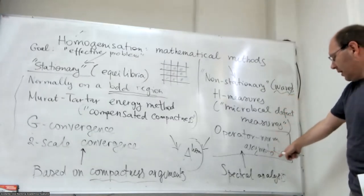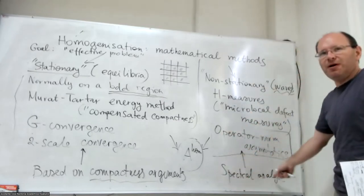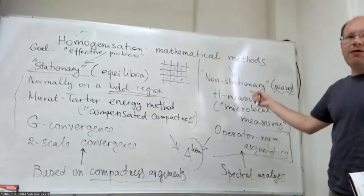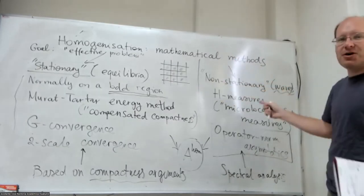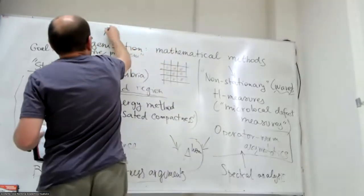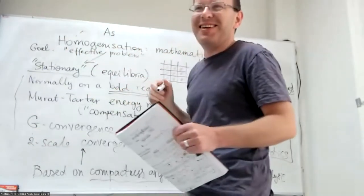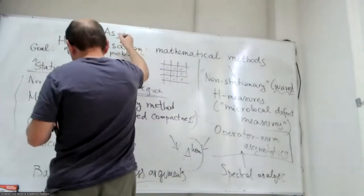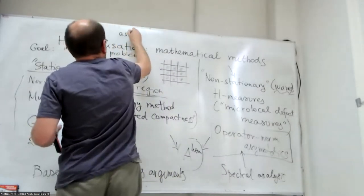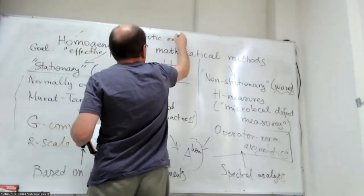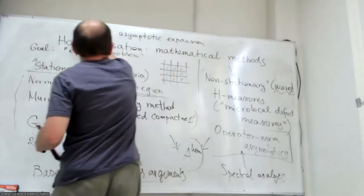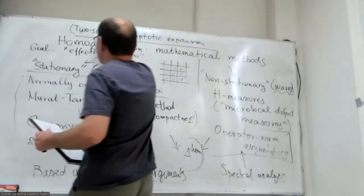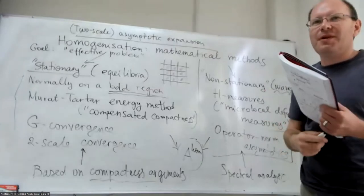There are two different groups of approaches. One is what they refer to as stationary techniques, typically applied on a bounded region, dealing with equilibria rather than waves propagating. I went over the energy method by Murat and Tartar, which goes back to the 1970s. All of these methods are based on a sort of compactness argument, which is why we work on a bounded region.